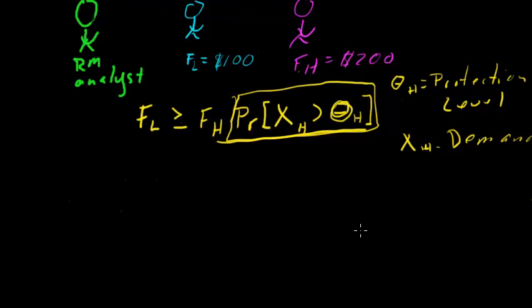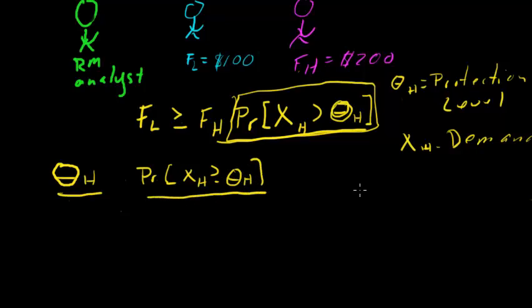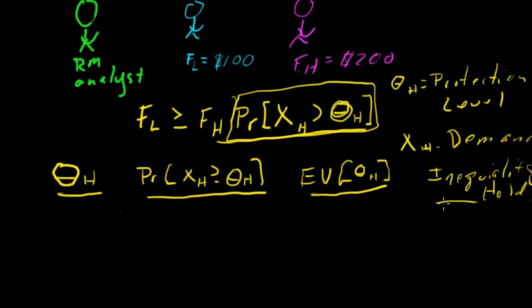So let's take a look now at putting some numbers to this and see if we can understand exactly what Littlewood was trying to do here. So we're going to pick some protection levels, some values for theta. We're going to pick some probabilities. I'm just going to make this up to make the math look good. So I'm just copying this probability statement, theta_H. And then we have some expected value. We're just going to write the expected value given that protection level. And then does the inequality hold? Because really, that's how you find the solution. You keep on changing theta until the inequality no longer holds.